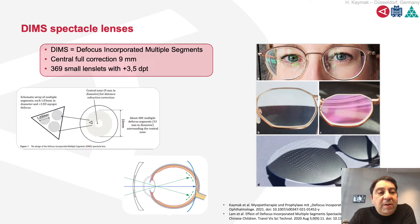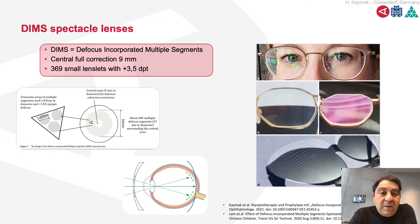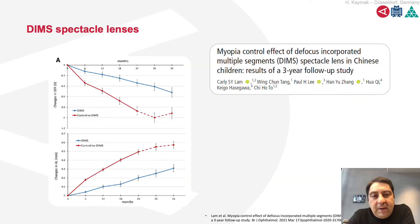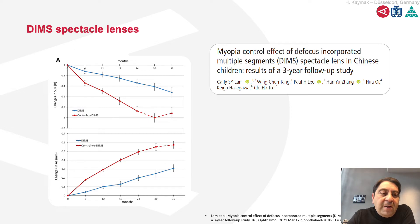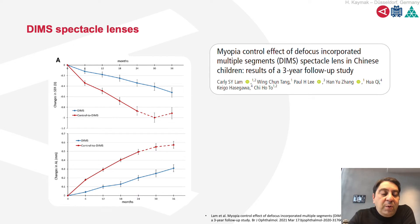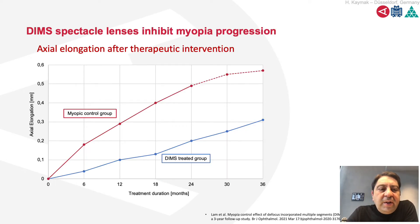We now have the possibility with DIMS spectacle lenses. I think that's the better option because we are not dependent on the wear duration effect of contact lenses — the glasses are always on the nose. The lenslets on the surface are barely noticeable. The results of the DIMS study show a statistically significant effect even after six months, indicating a very fast treatment response. After two years, when the control group switched to DIMS technology, the effect was still present.